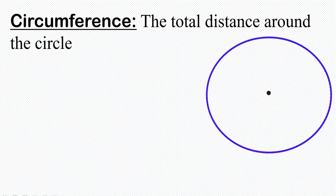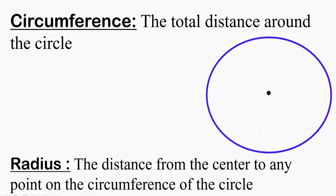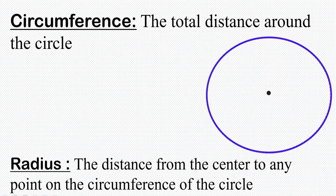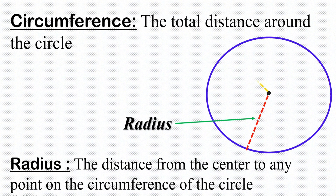The next part of the circle is radius. Radius is the distance from the center to any point on the circumference of the circle. Remember, we said that a circle is made up of sets of points equidistant from a fixed point in a plane. So the distance from the center to any point on the circumference of the circle is the radius.